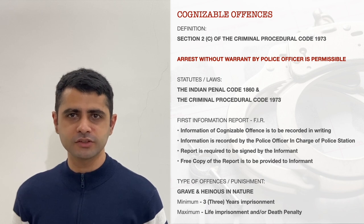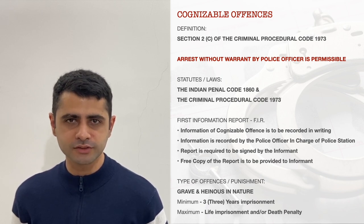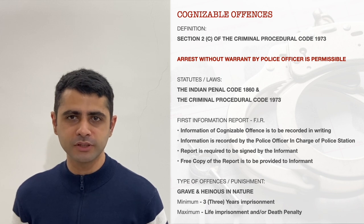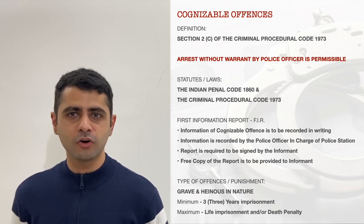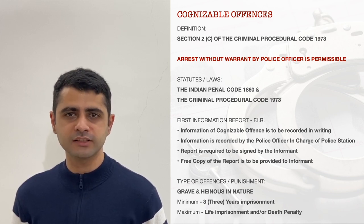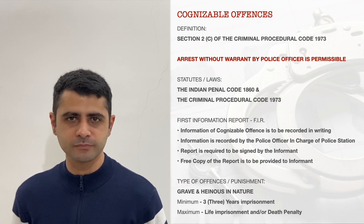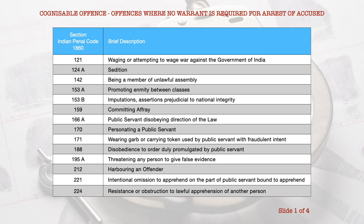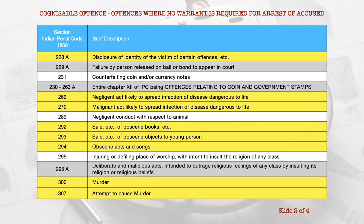Cognizable offenses usually have punishments prescribed for more than three years, going up to life imprisonment and or death penalty, as such offenses are serious and heinous in nature. A few of the offenses under the IPC, as read with the first schedule of the CrPC, which are identified as cognizable offenses, have been listed on the screen.